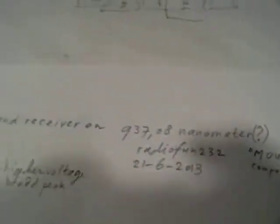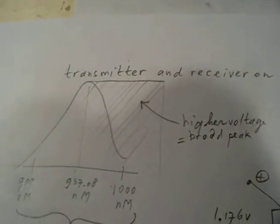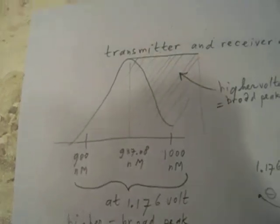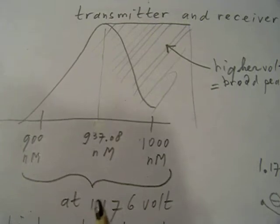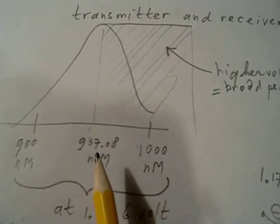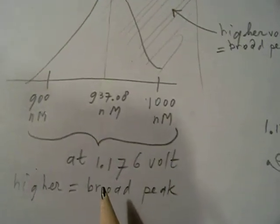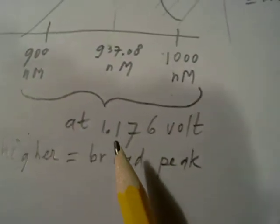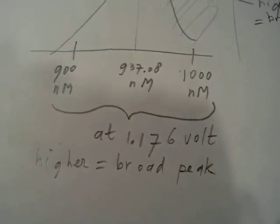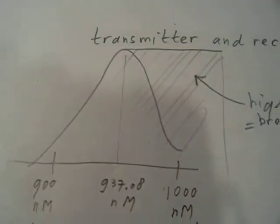I found experimentally and with spectrophotometer that this mouse LED sends out a frequency on 937.08 nanometers. And it only sends out that frequency when we connect to the LED here a voltage from 1.176 volts. I also found that when the voltage gets higher the peak broadens.